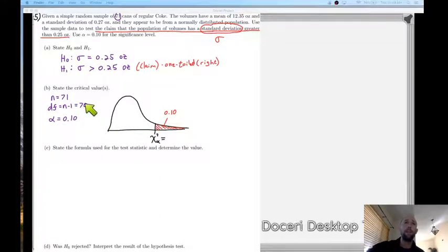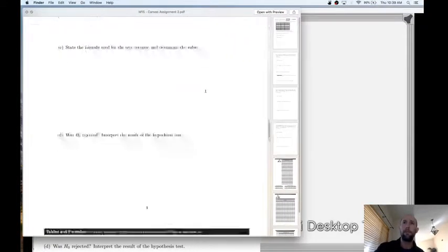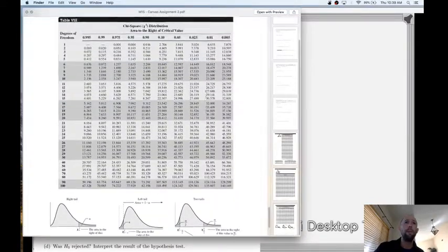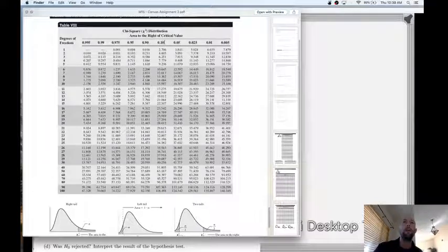We have our degrees of freedom is 70 and our area in the right-hand tail is 0.1. So we can go through and pull up our table. That's the last table in this assignment. And we have here this column with 0.1 represents the column with chi-square critical values with an area to the right of 0.1.